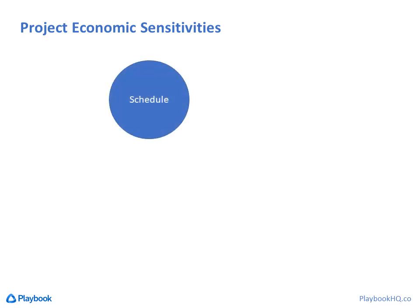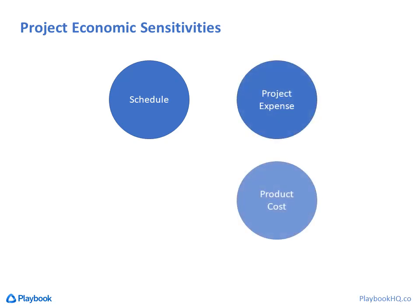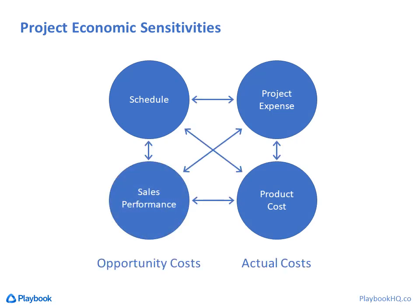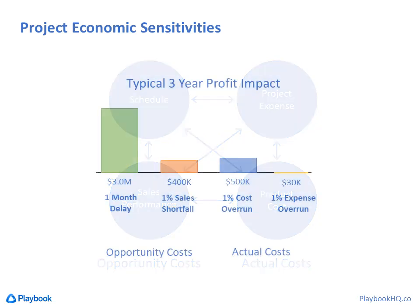In another video I'm going to show how to create a project economic model which analyzes the economic sensitivities of three other project variables that impact our lifetime profit: project expense, product cost, and sales performance. Once you know those, the teams can make trade-off decisions regarding things like scope, resources, design decisions, and schedule — all in relation to their impact to profit. That way, not only are better decisions made, but they're also made faster and without hassle. As this slide indicates, cost of delay usually has the biggest impact, so we might as well develop it first.